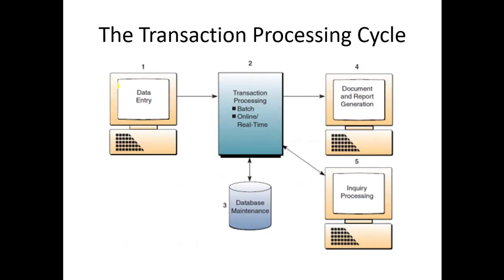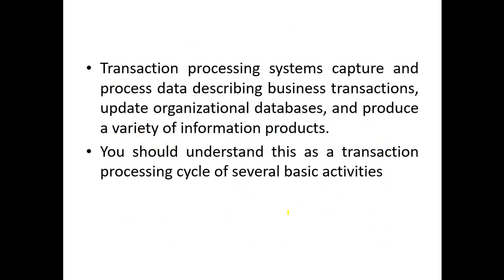The transaction processing cycle consists of: data entry as the first step, then transaction processing (which can be batch or online/real-time), followed by database maintenance. Data is then displayed through document and report generation or inquiry processing. Transaction processing systems capture and process data describing business transactions, update organizational databases and produce a variety of information products.